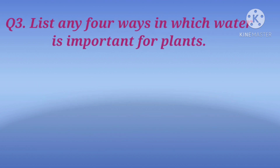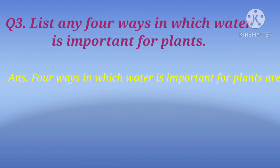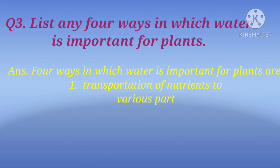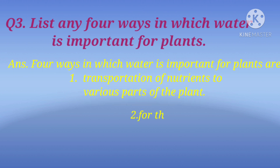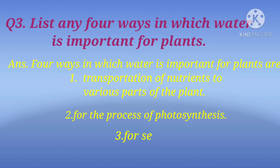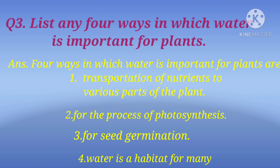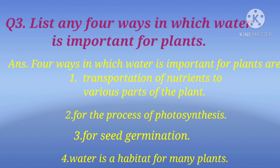Our next question is: list any four ways in which water is important for plants. The answer is: four ways in which water is important for plants are — number one, transportation of nutrients to various parts of the plant; number two, for the process of photosynthesis; number three, for seed germination; and number four, water is a habitat for many plants.